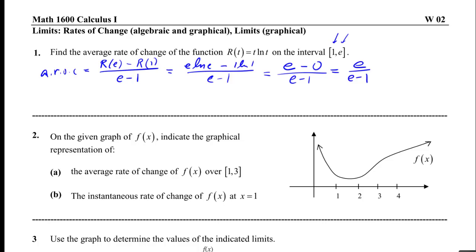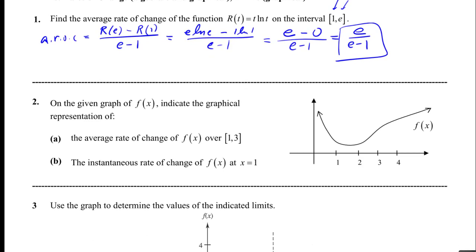That gives us e over e minus 1. It's not the most common number, but that's a perfectly fine answer. e over e minus 1 is the average rate of change of that function over the interval [1, e].